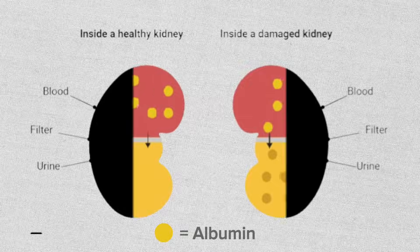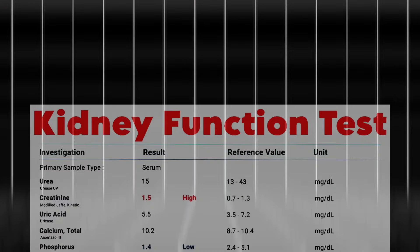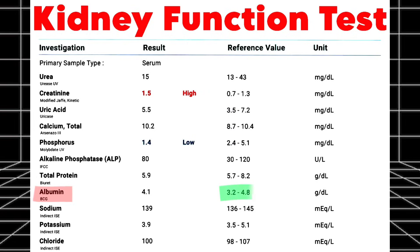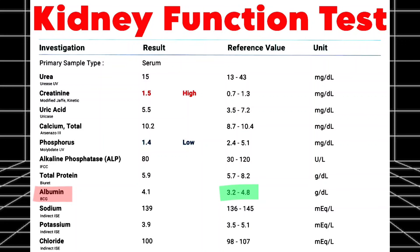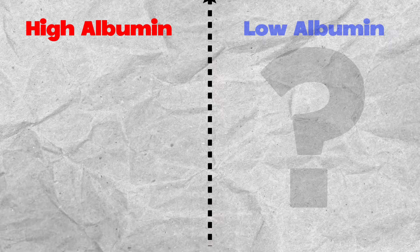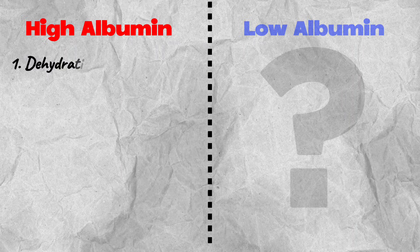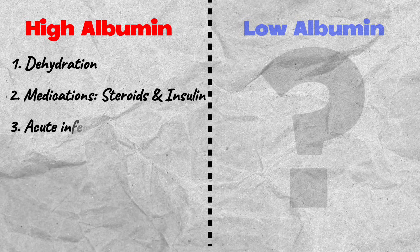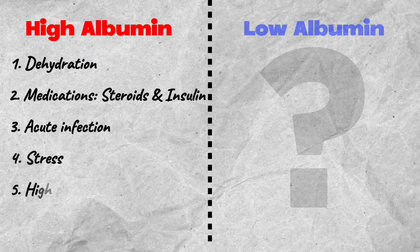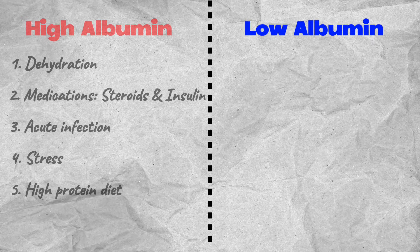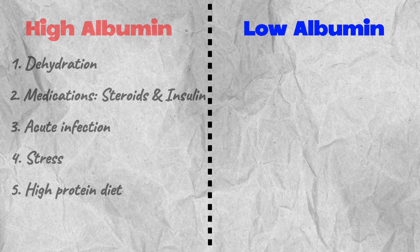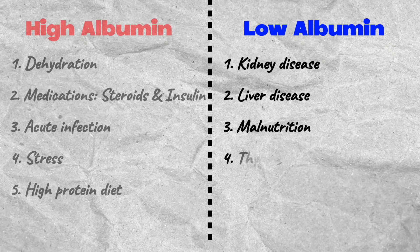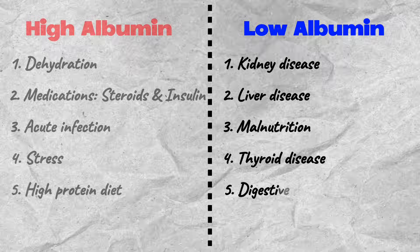Low protein in blood is seen in kidney disease, liver disease, low protein diet, malabsorption, and autoimmune diseases. Next in our report is albumin. Albumin is a protein and its level in blood helps diagnose kidney disease. The normal level of albumin in blood is between 3.2 to 4.8 grams per deciliter. High albumin is seen in dehydration, certain medications like steroids and insulin, acute infection, stress, and a high protein diet. Low albumin is seen in kidney disease, liver disease, malnutrition, thyroid disease, and digestive disease.